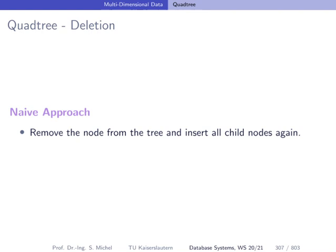Now, what about deletion of objects from our quadtree? Well, the naive approach is you're removing the node from the tree. So you're searching for, let's say, Toronto. Then you're removing the entire node, including the children. And then you're inserting the children again, starting from the root. That's the naive approach.